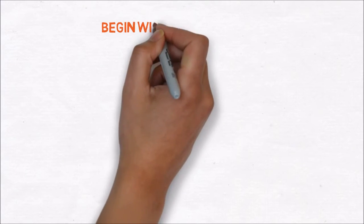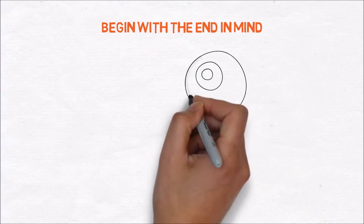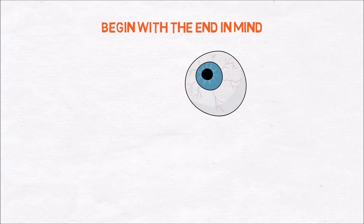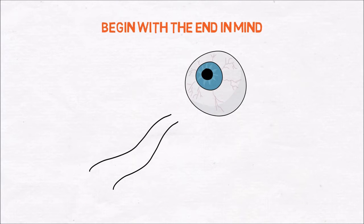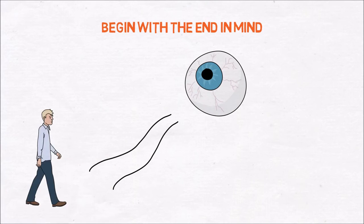The second lesson is to begin with the end in mind. Covey says we can use our imagination to develop a vision of what we want to become and use this to decide what values will guide us. In everything you do you have to start with a clear destination. By doing this you can make sure that the steps you are taking are in the right direction.